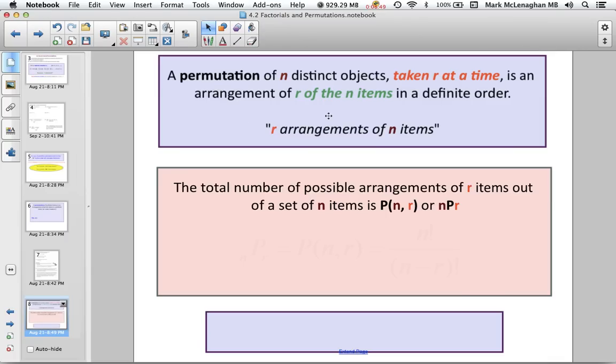So what happens if we don't have, we're not going to use all the letters? That's where we look into, so we have N distinct objects, and we're going to take R at a time. So we have R, R arrangements of N items. In our notation, it's PNR or NPR. Here's our formula. It looks similar to the factorial page, N factorial over N minus R factorial. So here we're doing our division of factorials.